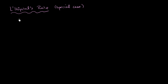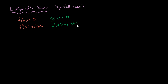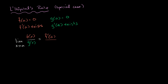The special case of L'Hôpital's Rule applies to the situation where f(a) is equal to 0, f prime of a exists, g(a) is equal to 0, and g prime of a exists. If these constraints are met, then the limit as x approaches a of f(x) over g(x) is going to be equal to f prime of a over g prime of a.